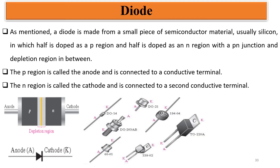A diode is a small piece of semiconductor material. We are always going to consider silicon, although we can use germanium to form a diode. But in all the episodes of this playlist, we are going to talk about silicon. A diode is a small piece of semiconductor material in which half of it is doped as a P region and half is doped as an N region. So there is going to be a P-N junction and a depletion region — all of which we discussed in the previous episode: how the N region is formed, the P region is formed, what is the P-N junction, and what is the depletion region.